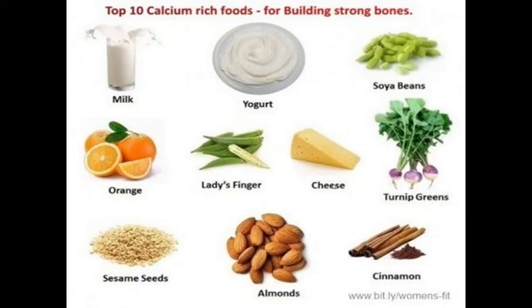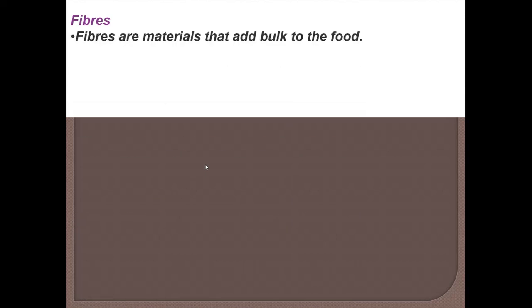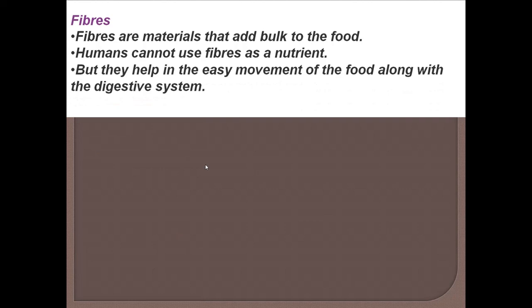Food sources rich in calcium: milk, yogurt, soy beans, orange, lady's finger, cheese, turnip greens, sesame seeds, almond and cinnamon are some food sources rich in calcium. Fibers or roughage are materials that add bulk to the food. Humans cannot use fibers as a nutrient, but they help in easy movement of food along the digestive system.